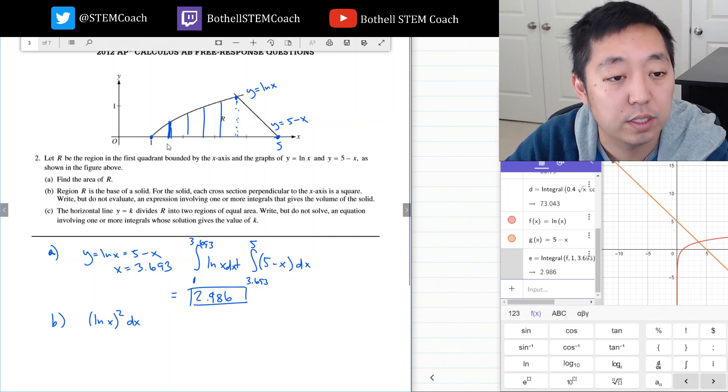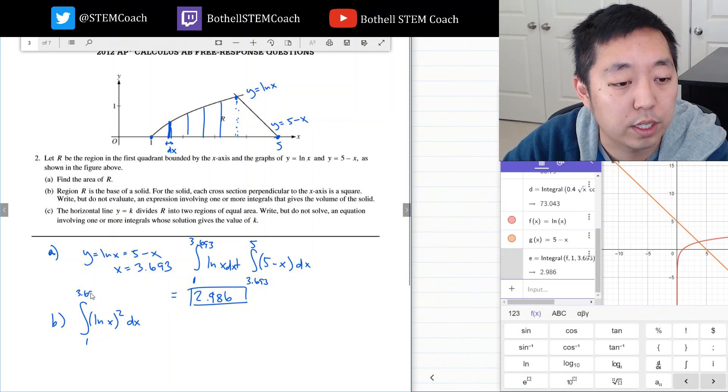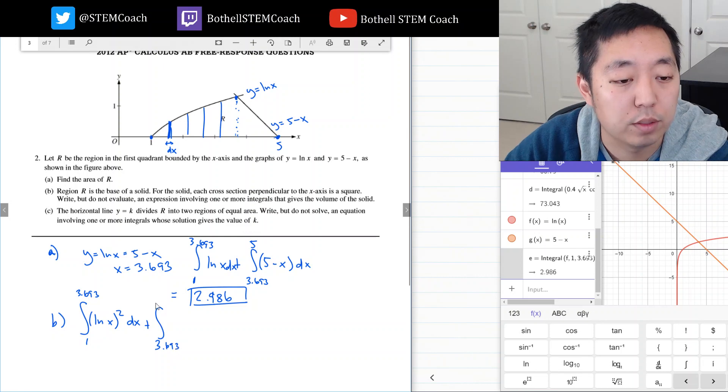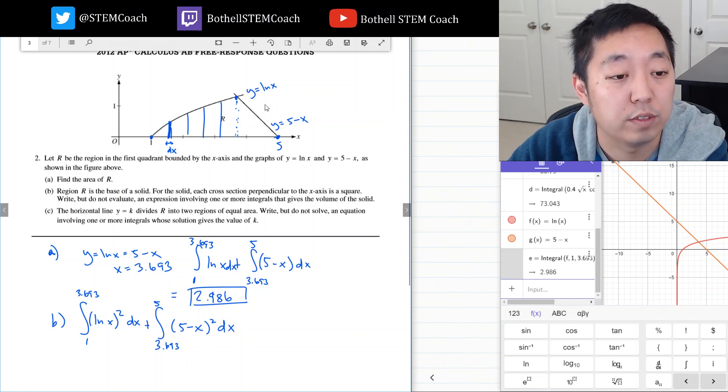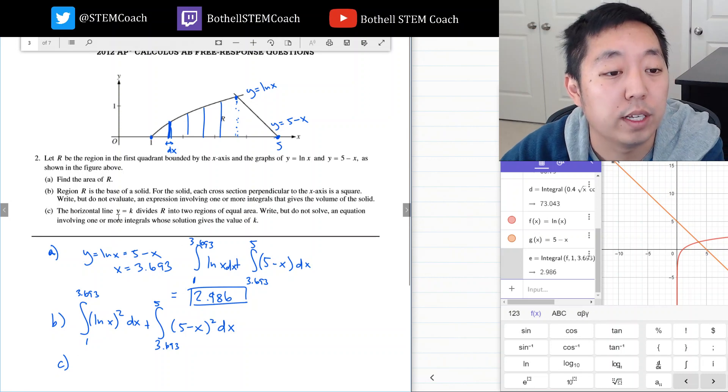And then I want to add up all of them from 1 to 3.693. Then over here I want to go from 3.693 to 5, and instead of ln of x I'm going to do 5 minus x squared dx. So we're going to add those two. Again, it's because the boundary, the curve, changes there. It said not to evaluate that integral.